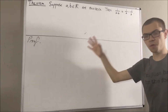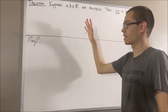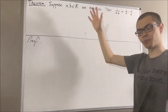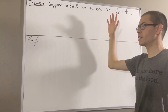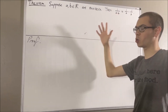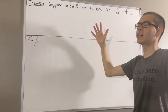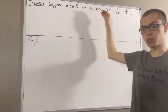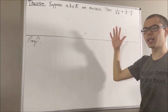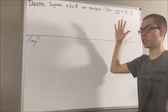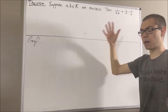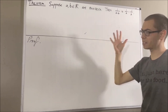Before we get into the proof, let's get some context. The book that I'm basing this proof off of is Intro to Real Analysis by Bartle and Sherbert, and this is just one of the exercises in the book. The way that the real numbers are described in this book are by its field properties.